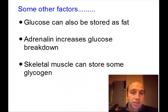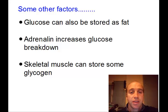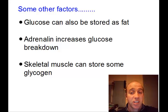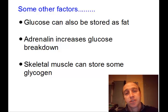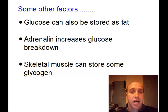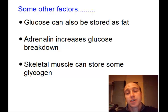As with many of the responses of the body, there can be many factors involved. Some of the other ones here might be that glucose can also be stored as fat, not just as glycogen. Adrenaline can be used to increase glucose breakdown. And the skeletal muscles can also store a little bit of glycogen — not anywhere near as much as what's occurring in the liver, but just for immediate supply. So all those sort of things can be factored into the body's response as well.